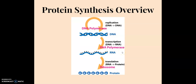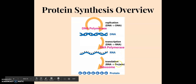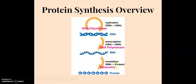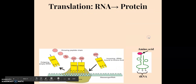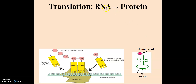Now we're going to talk about the second step of protein synthesis called translation, where we're going to take that mRNA molecule and create a protein out of it, which happens at the ribosome. Translation is creating proteins from the RNA — so from RNA to protein.